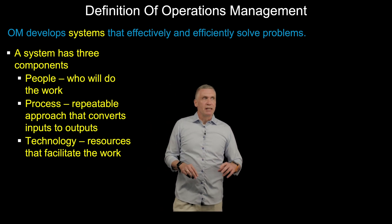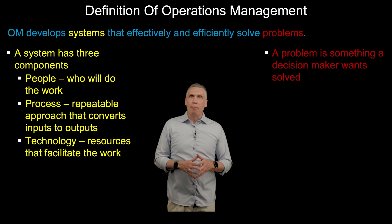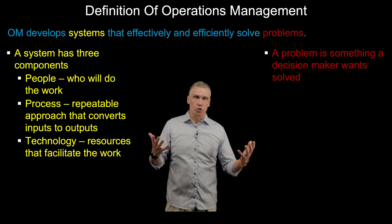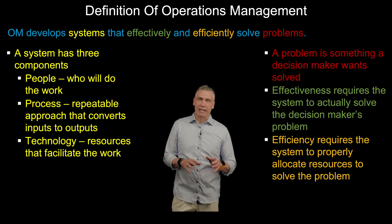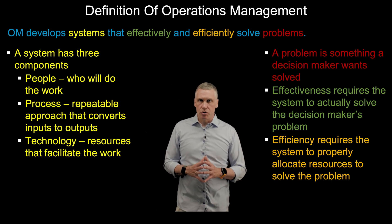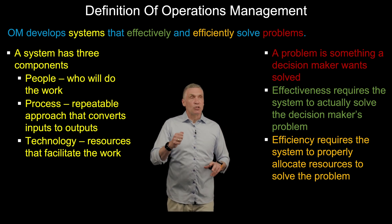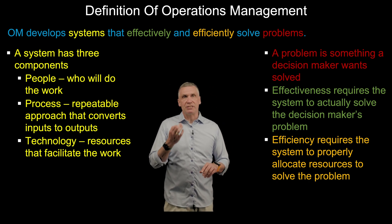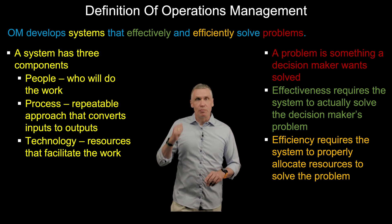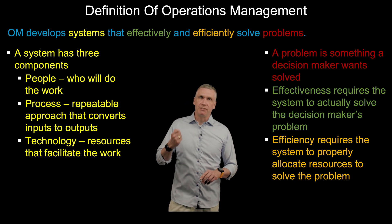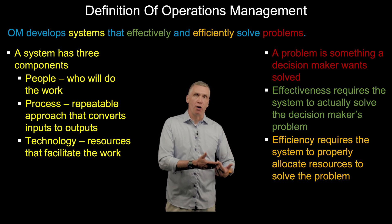OM develops a system that effectively and efficiently solves problems. A problem is an issue that a decision maker is faced with and is trying to resolve. Effectiveness requires that the system actually solve the decision maker's problem — that's the bar. An efficient solution properly allocates resources to solve that problem.